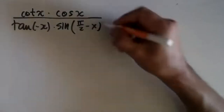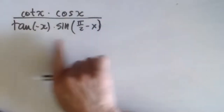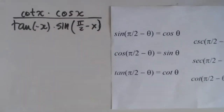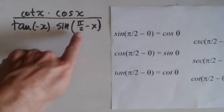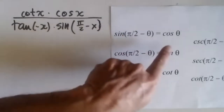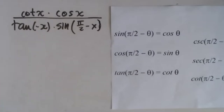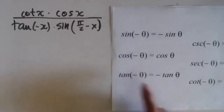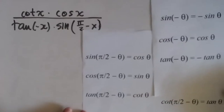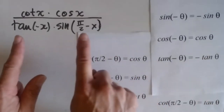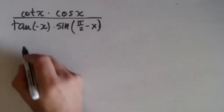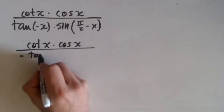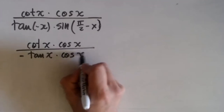Let's analyze what I have. I have expressions with pi over 2 and a negative. So I'm going to recall my identities. Sine of pi over 2 minus x is the cosine. So I can change this by cosine of x. And the tangent of the negative — the tangent of a negative is negative the tangent of the positive. So this is going to be: cotangent x times cosine x over negative tangent x times cosine of x.